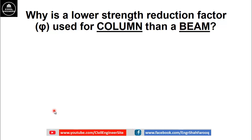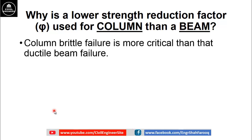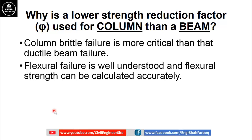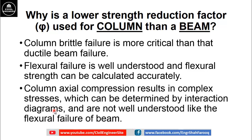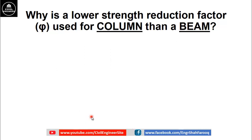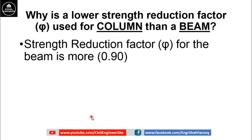Now we can understand why a lower strength reduction factor φ is used for columns than beams. The failure of columns is brittle, and brittle failure is more critical than ductile beam failure. In beams, flexural failure is well understood and flexural strength can be calculated accurately. While column axial compression results in complex stresses which can be determined by interaction diagrams and are not as well understood as the flexural failure of beams.